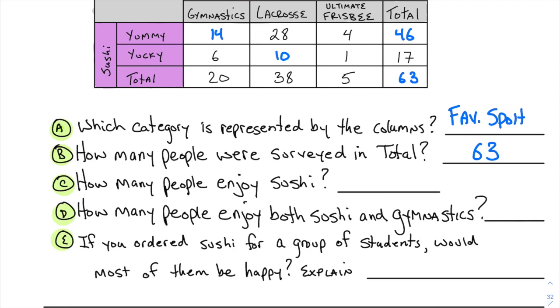How many people enjoy sushi? It doesn't say anything about sports, just how many people enjoy sushi. The sushi likers are the yummy people. That's 46, so 46 people said they like sushi.